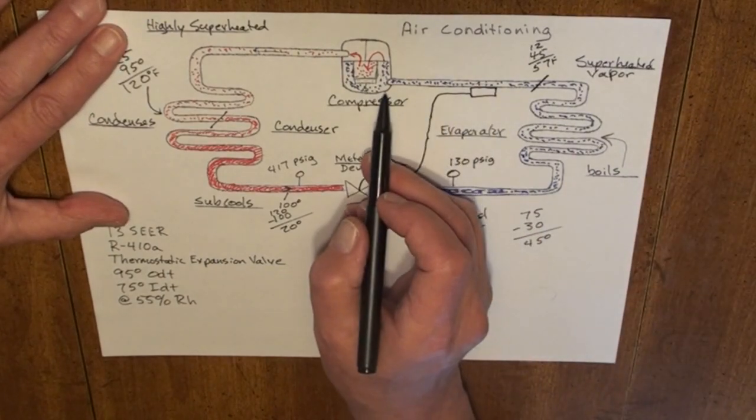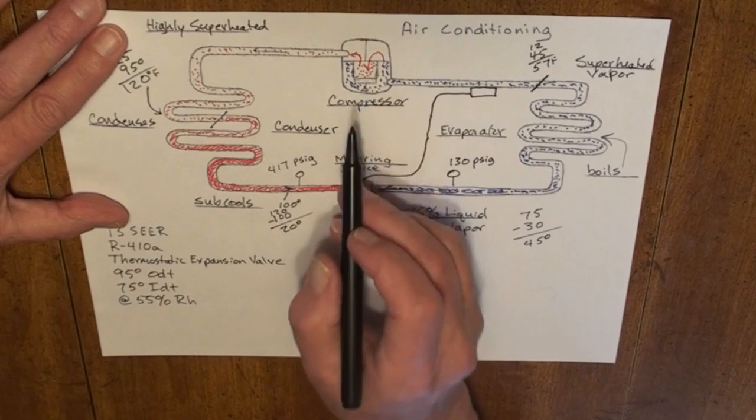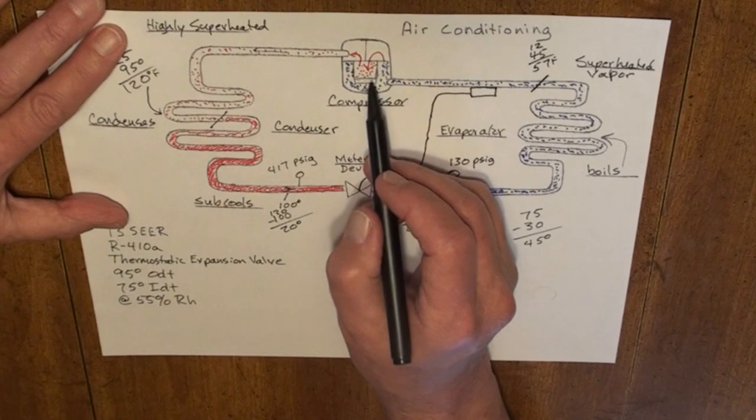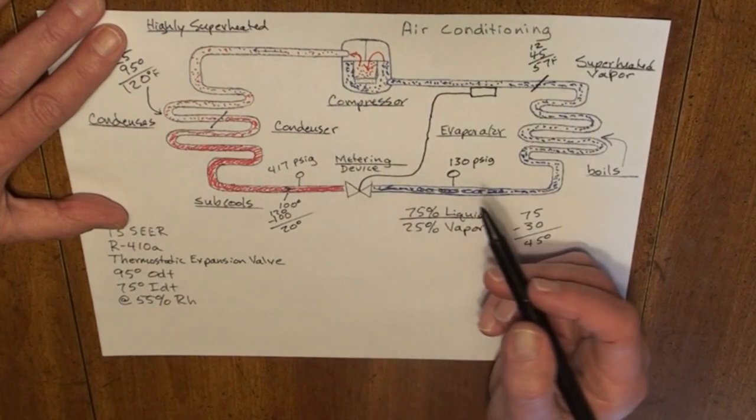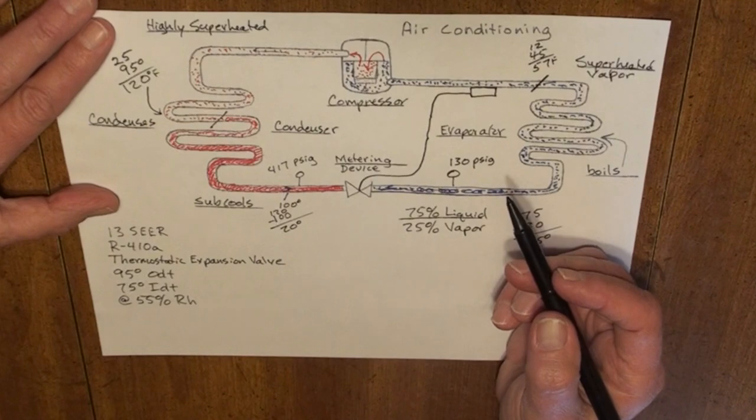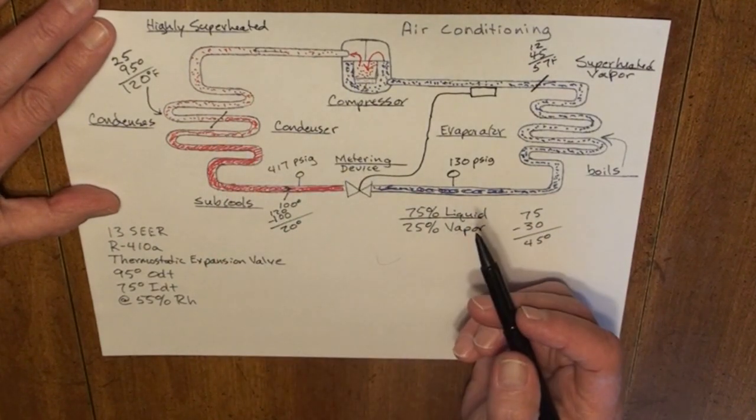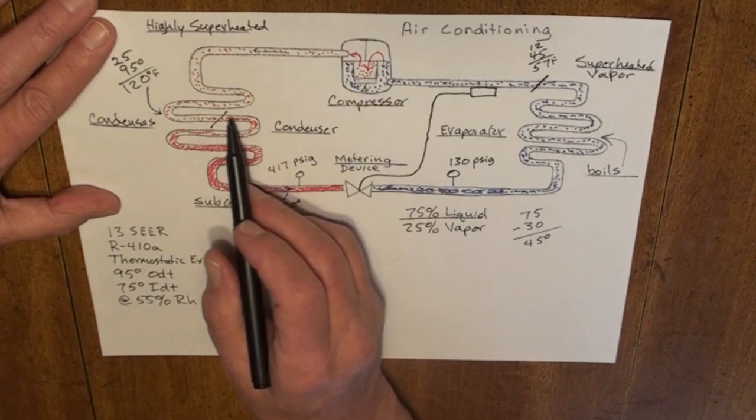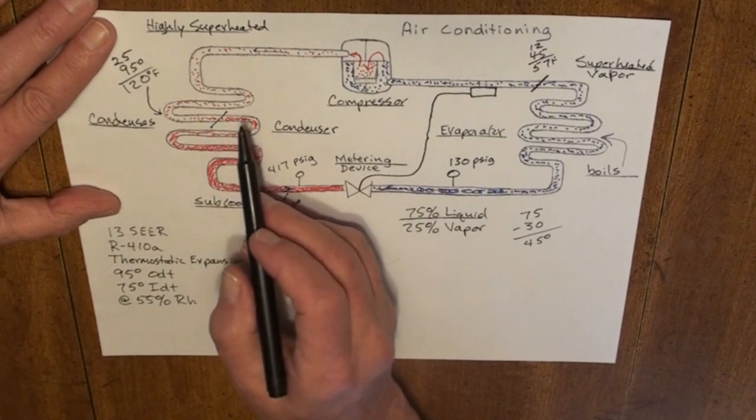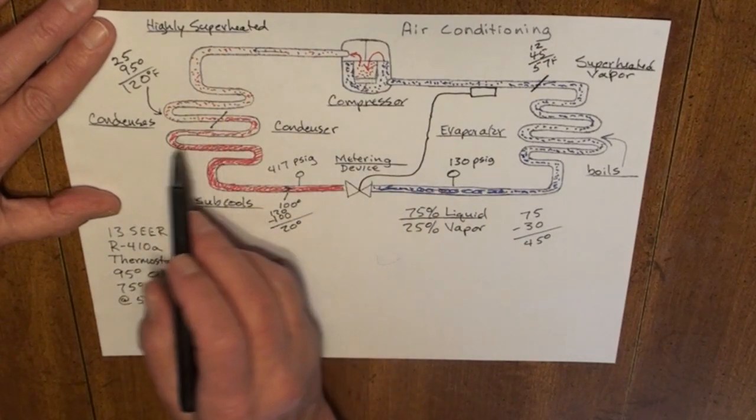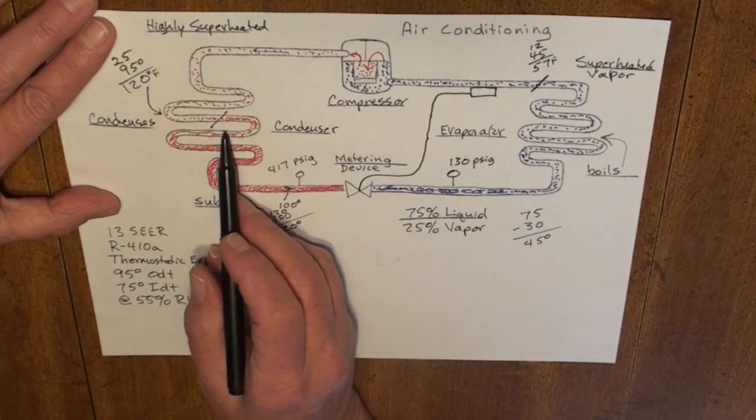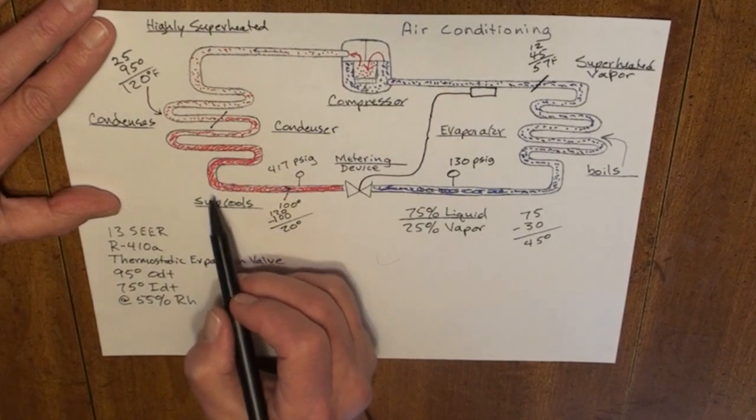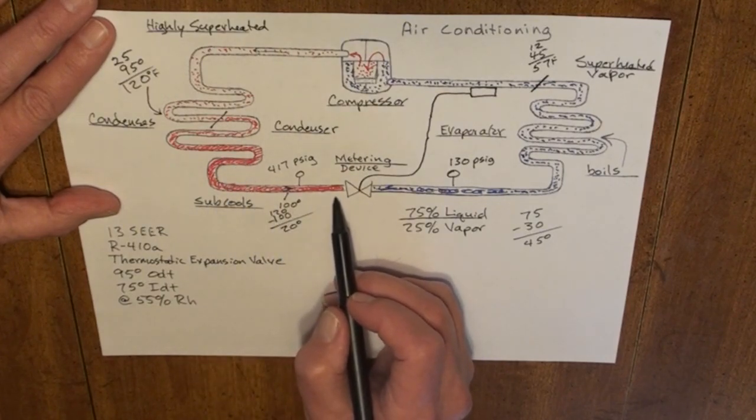It enters our compressor shell, absorbs heat from within the compressor, drawn into the compressor cylinder. It leaves as a highly superheated, high pressure vapor. It enters the discharge line, continues over to the top of the condenser, rejects sensible heat, rejects superheat. At 120 degrees, it begins to condense back into a liquid, leaves as a 100 degrees sub-cooled liquid.